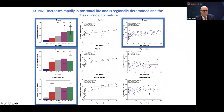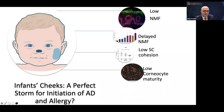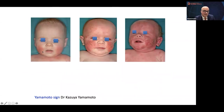The cheek really stands out as being very slow and flat to mature. NMF is low there, delayed to reach maturity. The cohesion of the stratum corneum is very low on the cheek, so you can strip things off easily by tape strips. The corneocytes are very immature. So here we have a site for AD initiation and for allergens to prime through — this is an explanation for the Yamamoto sign, also called the light bulb sign in infants, with a clear nose but very severely affected cheek, reflecting very different biology.